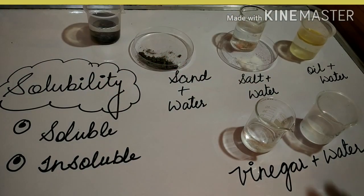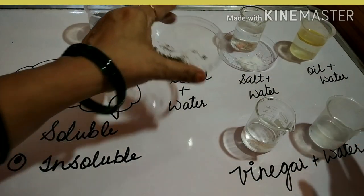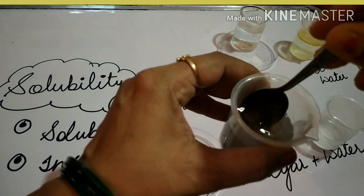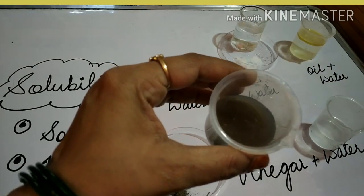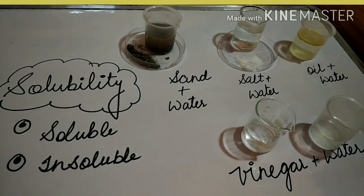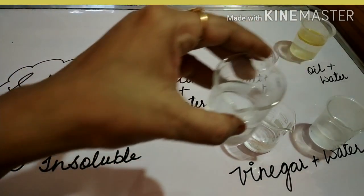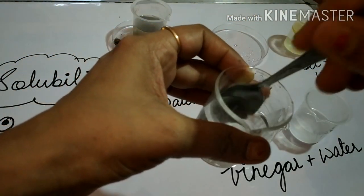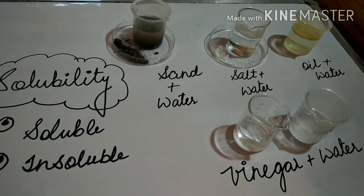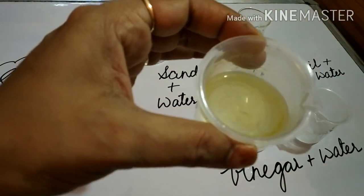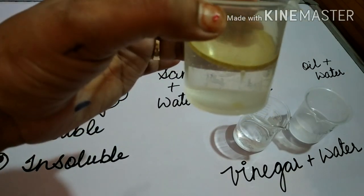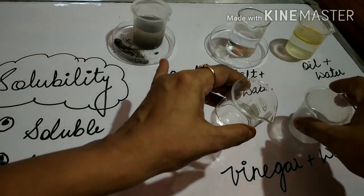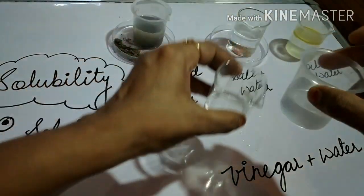Let's check the solubility. Take water and then put some soil inside it, and stir it so that it can easily dissolve. Now in another glass of water, put some salt and stir it properly, then keep it aside. In the next one, put some oil — you can see the oil remains on top of the water. Finally, take vinegar, pour it into water, and mix it gently.